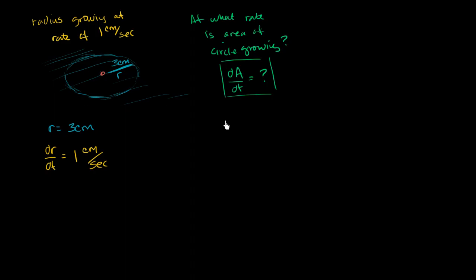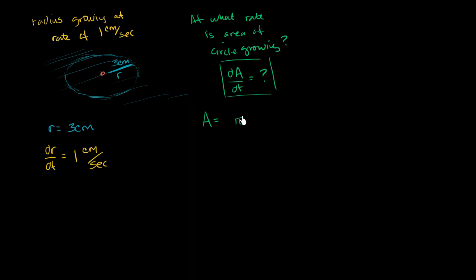This is elementary geometry: the area of a circle is equal to pi times the radius squared. Now what we want to do is find the rate at which the area is changing with respect to time. So let's take the derivative of both sides with respect to time — not with respect to r, but with respect to time.